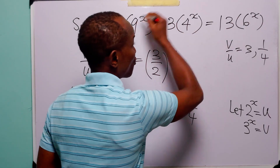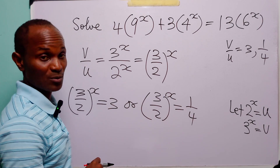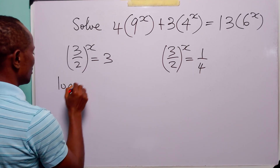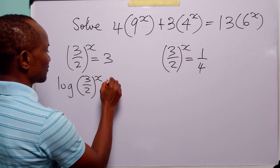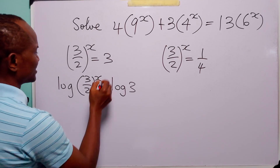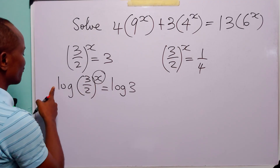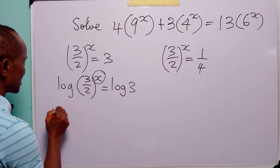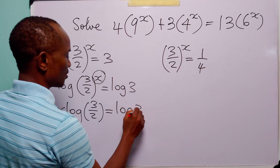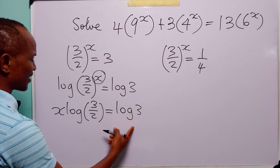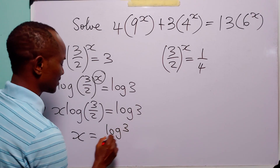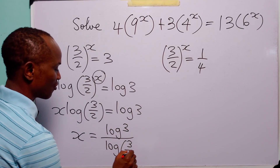So we have reduced the original equation to two simpler equations. To solve the first equation, we take the log of both sides: log (3/2) to power x equals log 3. Applying the power rule of logarithms, we bring x to the front: x times log(3/2) equals log 3. Dividing both sides by log(3/2), x equals log 3 divided by log(3/2).